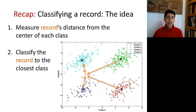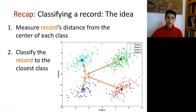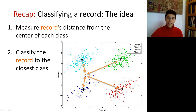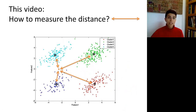Let us first recall how discriminant analysis works. The idea is to look at each one of the classes — in this example we have four classes — compute the center of each class, and then measure the distance of the record of interest from the center of each one of the classes. We then classify this record as the class that has the nearest centroid. In this video, we're going to concentrate on measuring that distance.